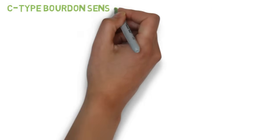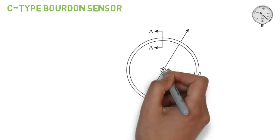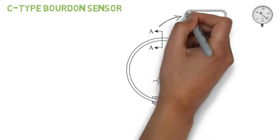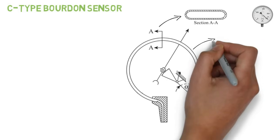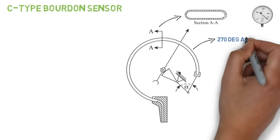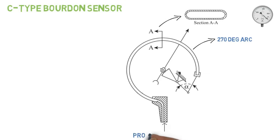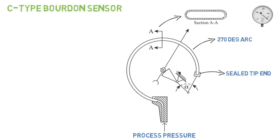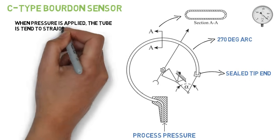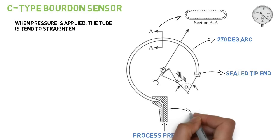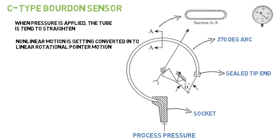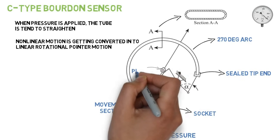C type Bourdon tube usually has an arc of 270 degrees. The process pressure is connected to the tube support end, while the tip end is sealed. When pressure is applied, the tube tends to straighten. The resulting tip motion is non-linear. This non-linear motion is converted into linear rotational pointer motion mechanically, by means of a geared sector and pinion movement through a connecting link.